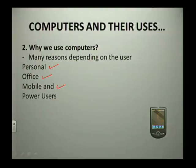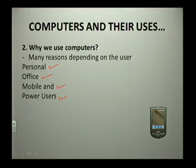Another user is a mobile user — someone who uses a computer while on the road, so they don't have to be at home or at the office. They still need access to email, phone calls, and information wherever they are. Lastly, we have power users, such as scientists, video editors, engineers, and gamers, who use computers for bigger, more demanding purposes and require powerful machines.